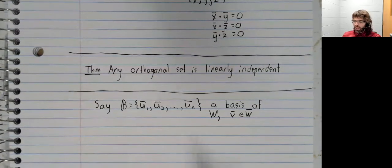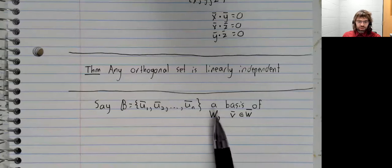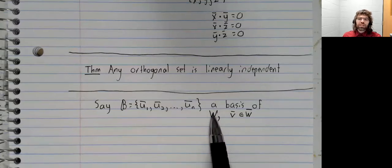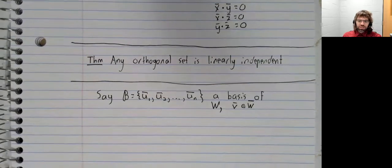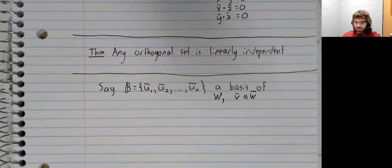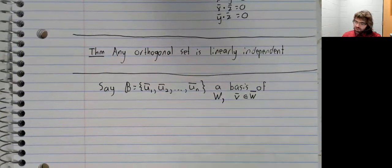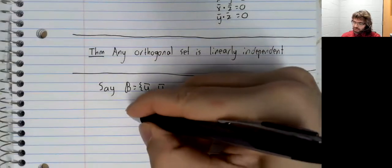Say that we have a basis of a vector space W, a subspace of R^k here, and we have a vector in the subspace. Well, since a basis is a spanning set,